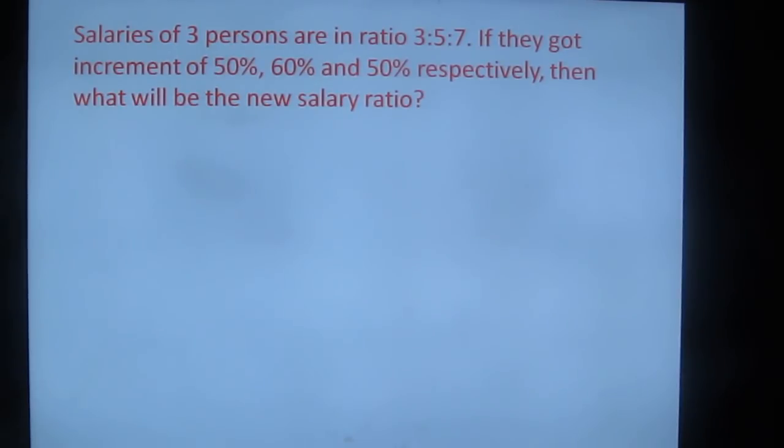Salaries of 3 persons are in the ratio 3:5:7. If they got increment of 50%, 60% and 50% respectively, then what will be the new salary? As I have said in my previous videos, when you want to remove the ratios 3:5:7, you should suffix x. So now the first step is 3x, 5x and 7x.